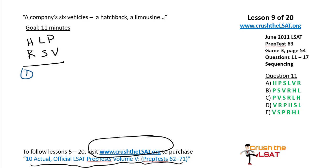Rule one: at least one vehicle later in the week than H. What does that really mean? That means H is not last. I'm going to put that in the diagram in a moment. Rule two: R is later in the week than V and earlier in the week than H. So we have V < R < H. We want to make sure we put V on the correct side and H on the correct side. We'll put two marks next to H, one dot next to R, one dot next to V. The more games you do, you might find it unnecessary to put those dots by the letters, but it's helpful early on.